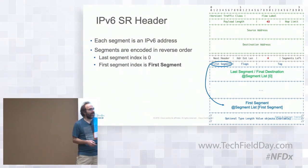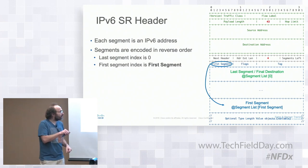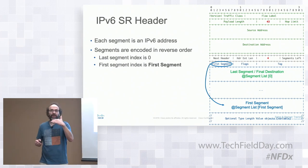In the SRH, there are several important fields. There is a list of segments—the last segment (the final destination) is always placed first in the list, at the end of the SRH. The SRH header is 8 bytes, with 16 bytes per individual segment. A pointer in the header always points to the first segment and shows where the end of the SRH is.